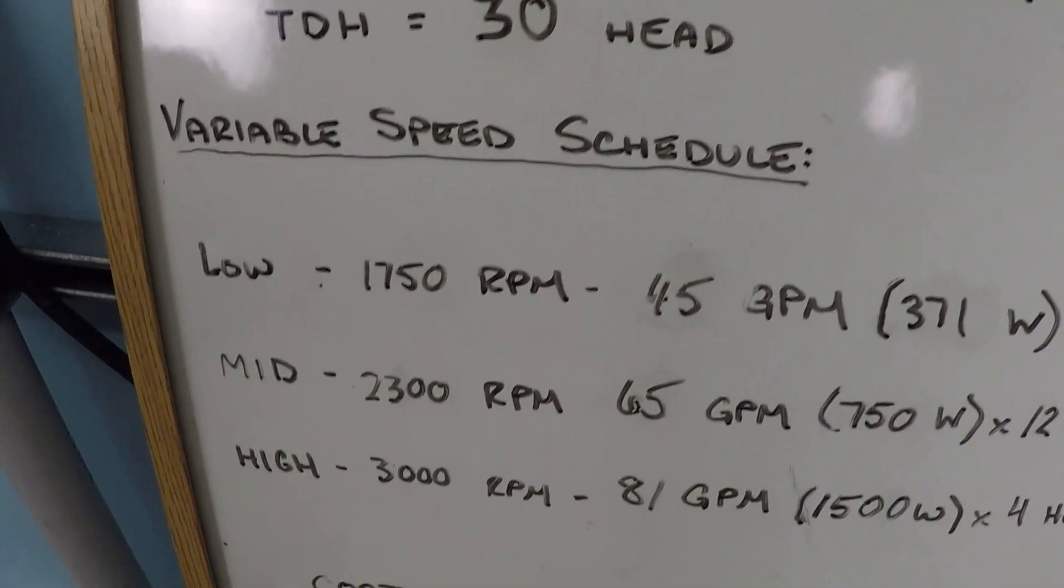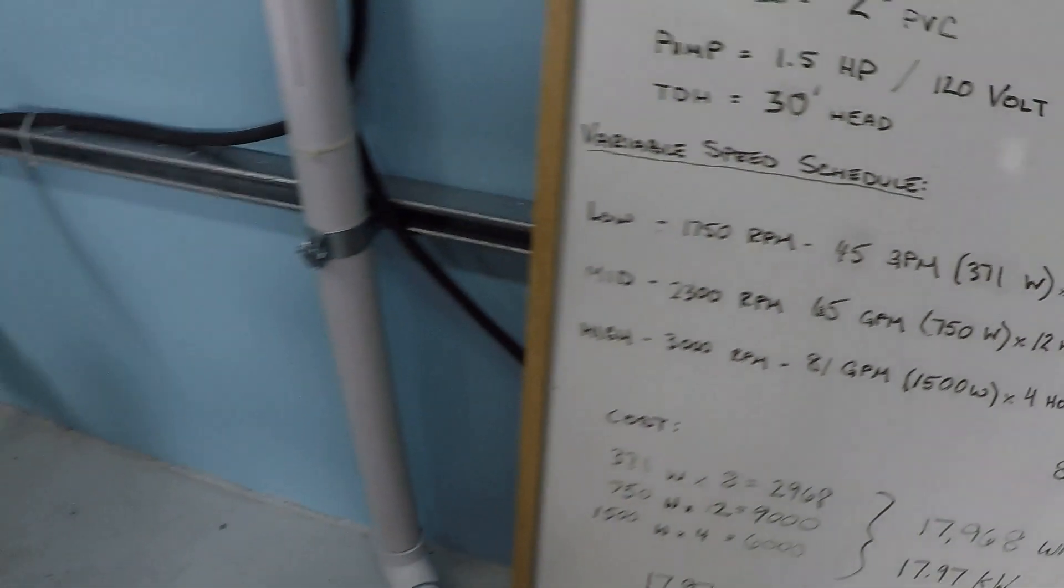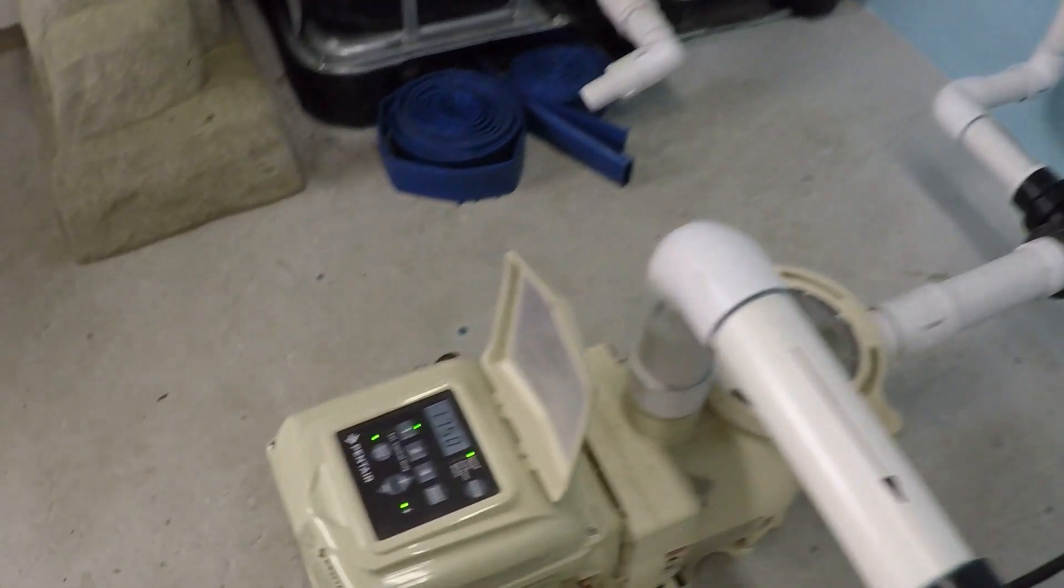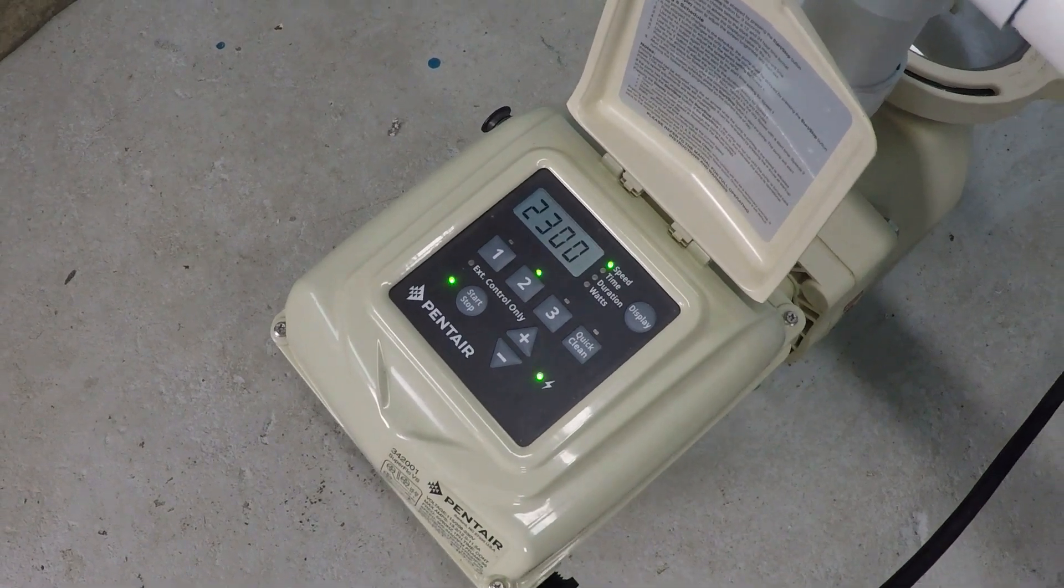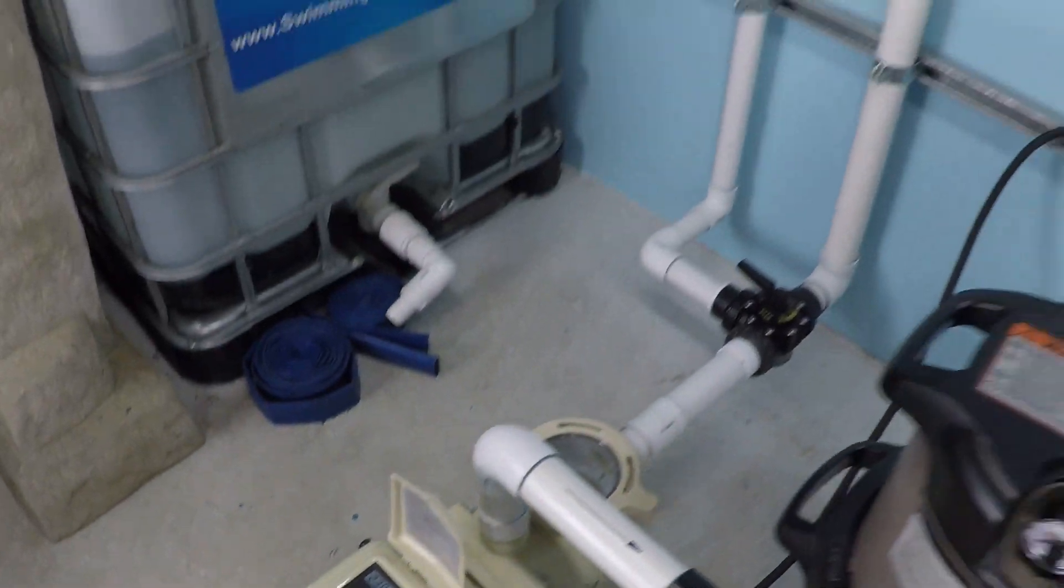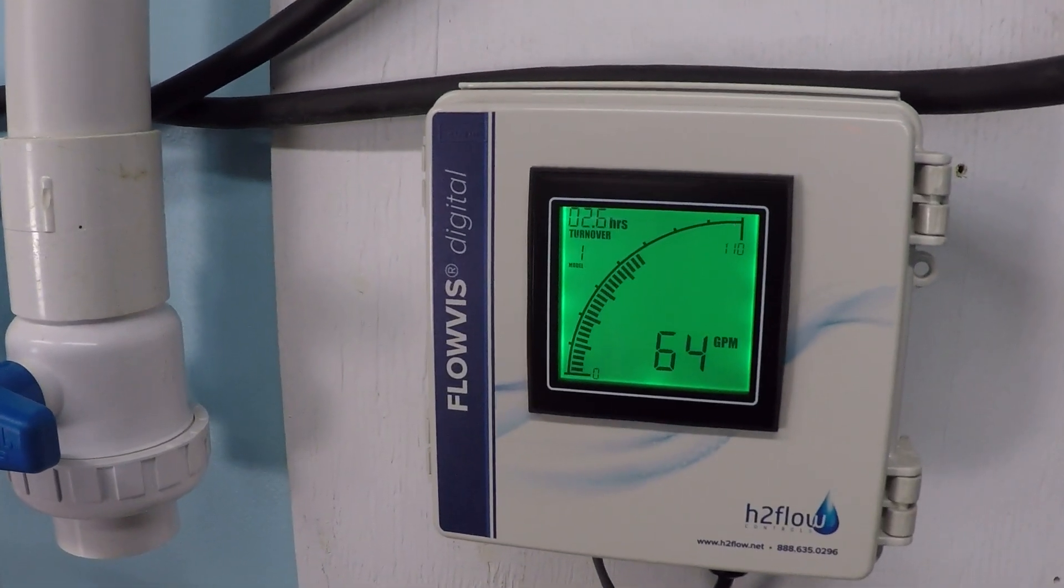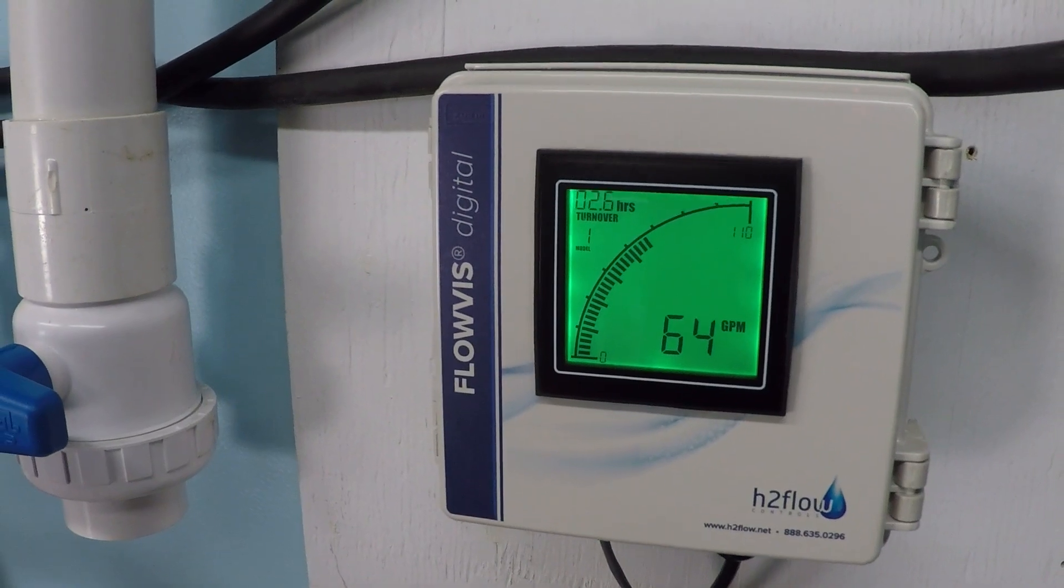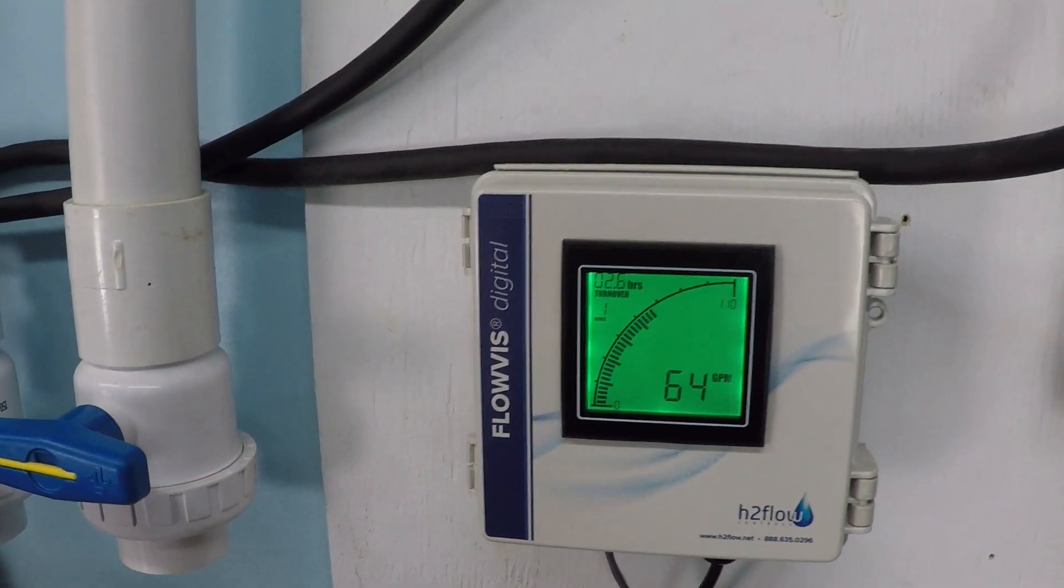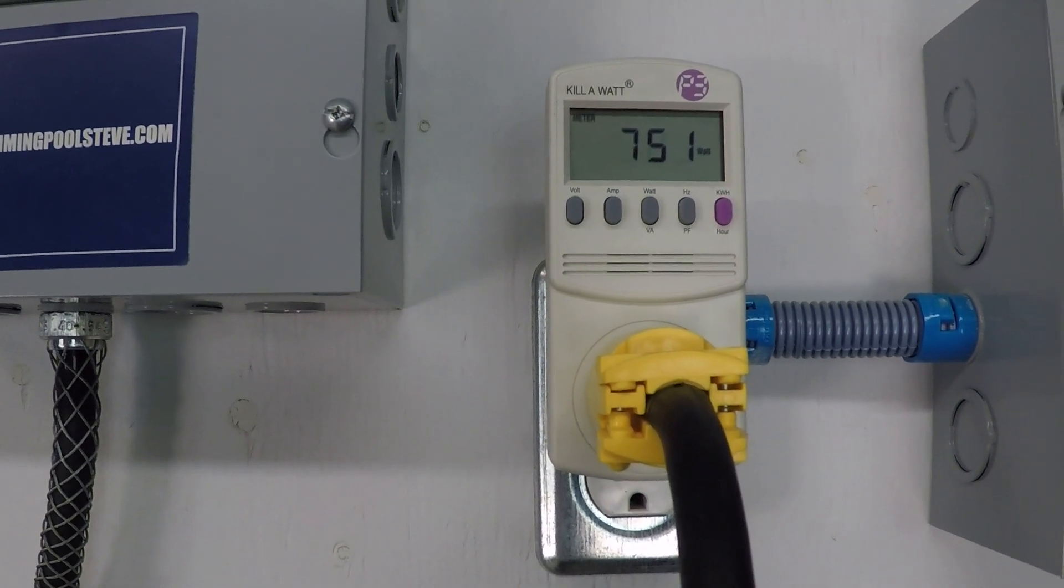Now we're going to look at 2,300 RPM, 65 gallons per minute, 750 watts. Looking for 65, we've got 64. Sometimes it's got a little bit of a variance there. Just a little bit of a variance there, just a bit over 750.